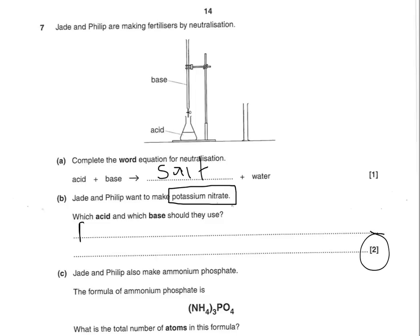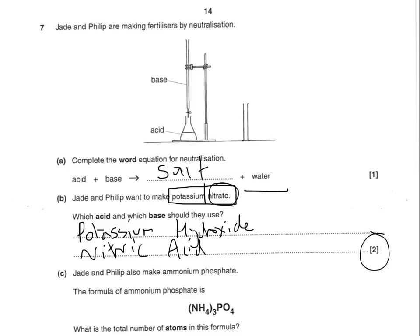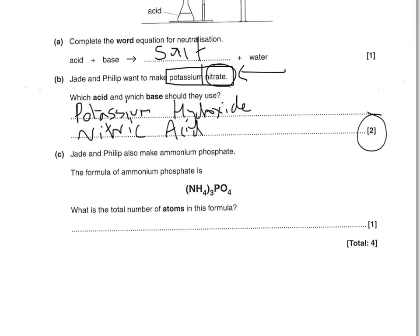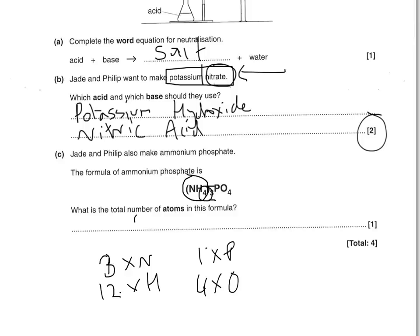When you've got a salt, take the first word — potassium — and put hydroxide on the end to give you your alkali: potassium hydroxide. The second word, nitrate, is based on the acid — nitric acid is what makes nitrates for salts. Jade and Philip also make ammonium phosphate. What is the total number of atoms in its formula? There are three lots of all the atoms in the bracket because the three is on the outside. So you've got three N's, 12 H's, one P, and four O's — giving a total of 20 atoms.